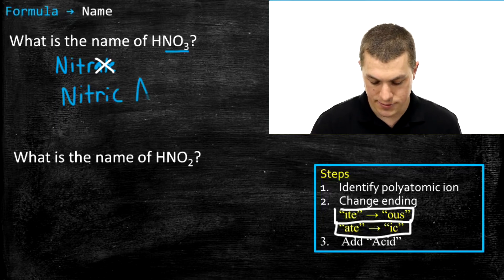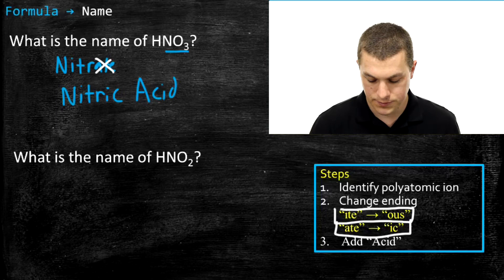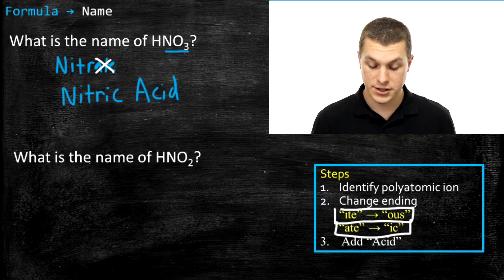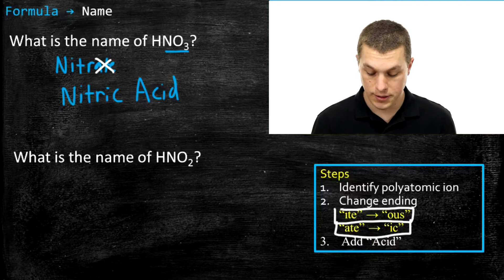And then all we do is we add acid. So that's it. That's the naming rules. This is actually the easier direction, going from the formula to the name. We'll go in the other direction in a little bit, and I'll show you why there's one more step there.